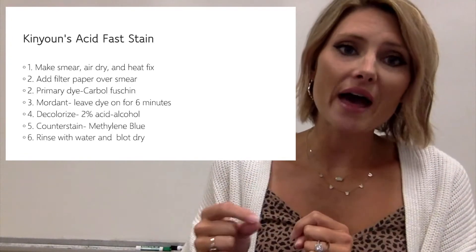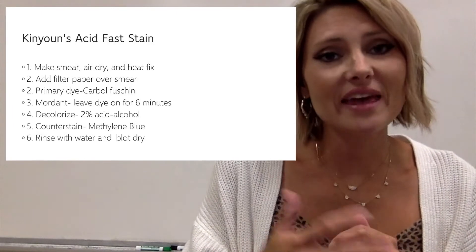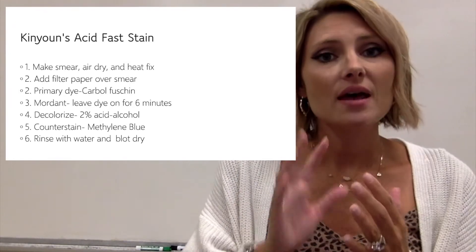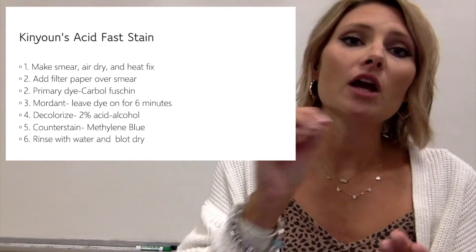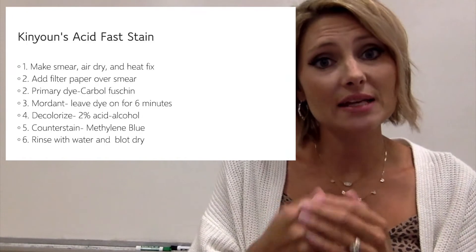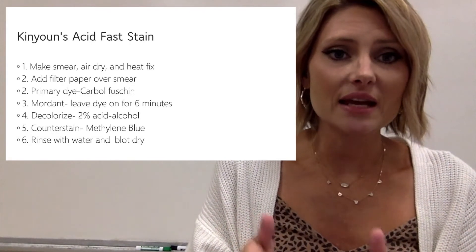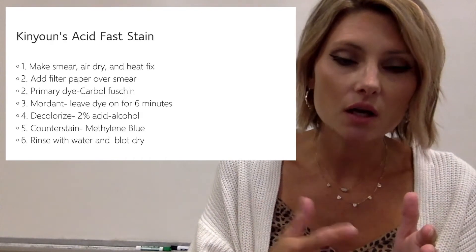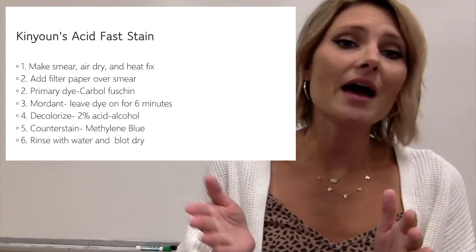The decolorizer in this stain is 2% acid alcohol, which is very different than what we've used before. An acid fast organism is called that because the stain cannot be rinsed out with an acid — that's why it's called acid fast. The acid fast organisms will keep the carbolfuchsin stain, but non-acid fast organisms will easily be washed out with the acid alcohol. Our counter stain is methylene blue. At the end, acid fast organisms will be pink/magenta and non-acid fast organisms will stain blue.